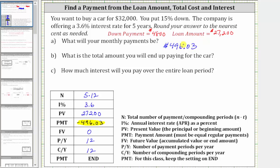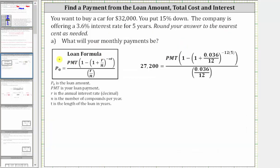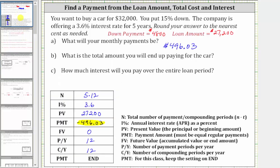Let's also check this using the loan formula. For the loan formula, P-sub-zero is the loan amount, PMT is the loan payment, r is the annual interest rate as a decimal, n is the number of compounds per year, and t is the length of the loan in years. Note that for the loan formula, lowercase n is compounds per year, while for the TVM solver, capital N is the total number of payments over the entire loan — equal to lowercase n times t. We need to be careful about what n represents.